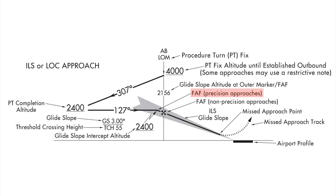Let's look at the FAA charts in different terms. The Final Approach Fix for precision approaches is depicted by the glide slope intercept and the minimum altitude — shown as the bend in the solid line. In this example, the glide slope intercept altitude is 2,400 feet — that's your minimum altitude which intercepts the glide slope. Another depiction on the FAA charts is the glide slope altitude at the outer marker, the Final Approach Fix, depicted in lighter, smaller lettering. That's the glide slope altitude when you're at the outer marker or the Final Approach Fix.